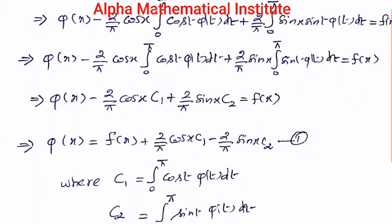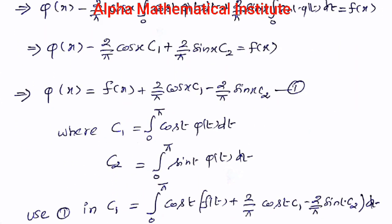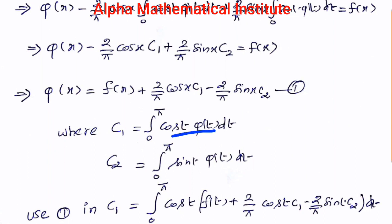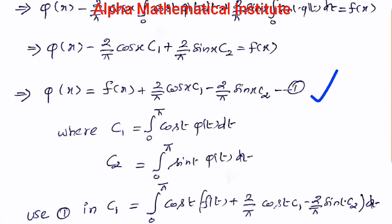This can be written as phi(x) minus (2/π) cos x · c1 plus (2/π) sin x · c2 equals f(x), where c1 = integral from 0 to π of cos t · phi(t) dt, and c2 = integral from 0 to π of sin t · phi(t) dt. Since the limits are constants, these integrals evaluate to constants c1 and c2. Therefore phi(x) = f(x) + (2/π) cos x · c1 minus (2/π) sin x · c2. Call this equation number 1.